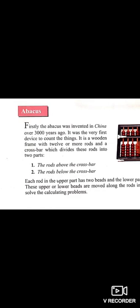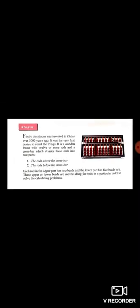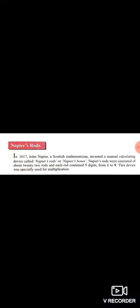The second one is Napier's Bones. In the 1670s, John Napier, a Scottish mathematician, invented a manual calculating device called Napier's rods or Napier's Bones. Napier's rods consisted of about 22 rods and each rod contains nine digits from one to nine.